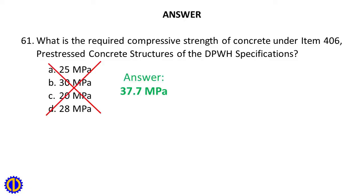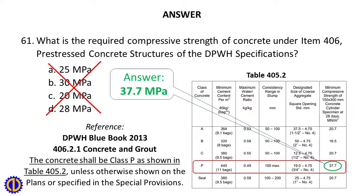Answer: 37.7 MPa. Reference: DPWH Blue Book 2013, Section 406.2.1 Concrete and Grout. The concrete shall be Class P as shown in Table 405.2, unless otherwise shown on the plans or specified in the special provisions.